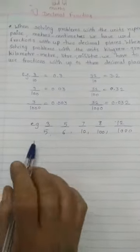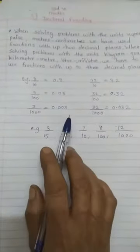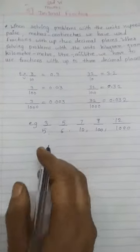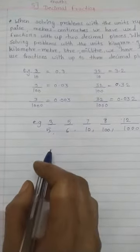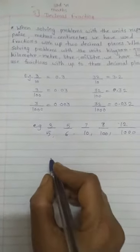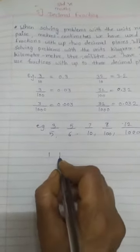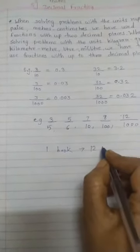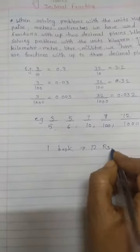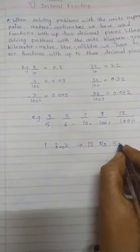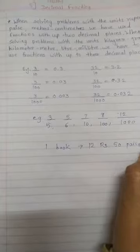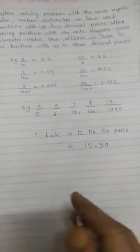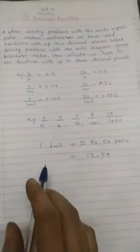See, this decimal fractions we are using in our daily life. See, for example, when we are buying any books from shops, then if book price is, see, 1 book price has 12 rupees and 50 paise. Then this is we are writing as 12.50.